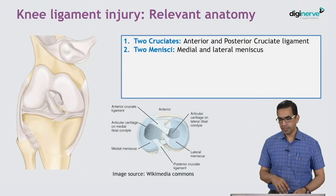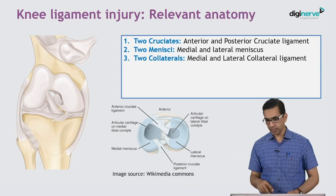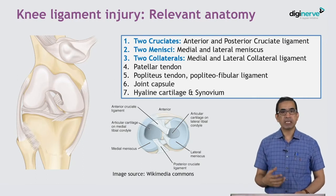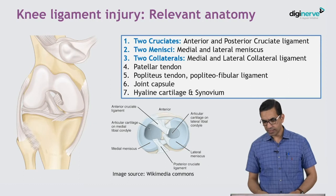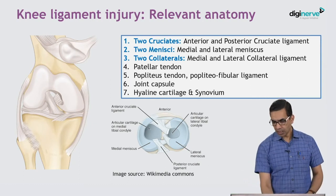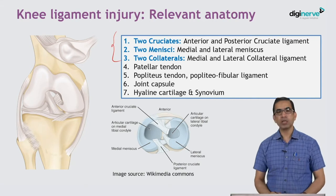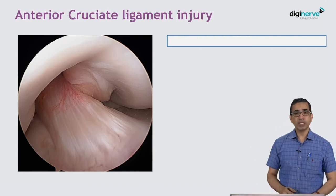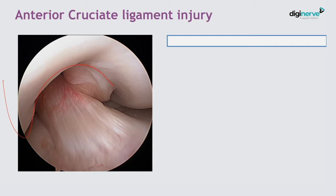We'll start with knee ligament injuries. The knee has two cruciates, two menisci, two collaterals, patellar tendon, popliteus tendon, poplitofibular ligament, capsule, synovium, and hyaline cartilage. Our session will discuss the cruciates, collaterals, and menisci. Before we move on to the injuries, here is an arthroscopic image of the right knee showing the distal femur, femoral condyle, intercondylar notch, and the ACL — a beautiful arthroscopic view.